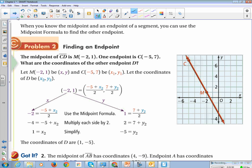When you know the midpoint and the end of the segment, you can use the formula to find the other point. So, for example, midpoint is at negative 2, 1, and one end is at negative 5, 7. So we have the end results. We need to fill in the blank to find the beginning results.